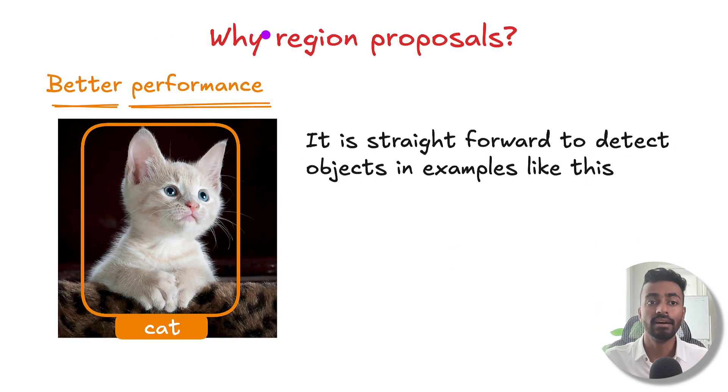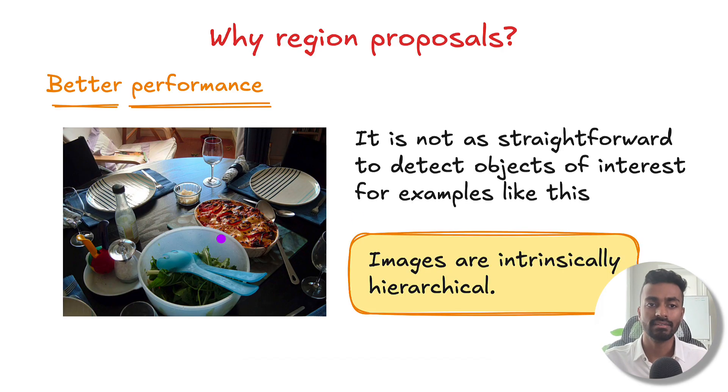So another reason why we use region proposals is for better performance. So consider this image over here. It's actually a pretty straightforward image for us to detect objects. So it's easy to detect a cat. But this image here, it's not super straightforward. If we wanted to detect what is a table, the bounding box would probably be around this entire table, even with all the contents on it. But this table consists of also a bowl, which we would draw a bounding box like this, and then a salad, which would be like this.